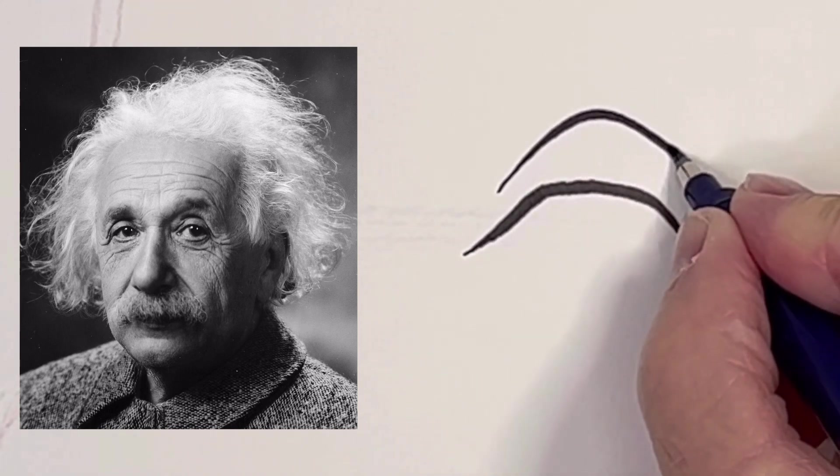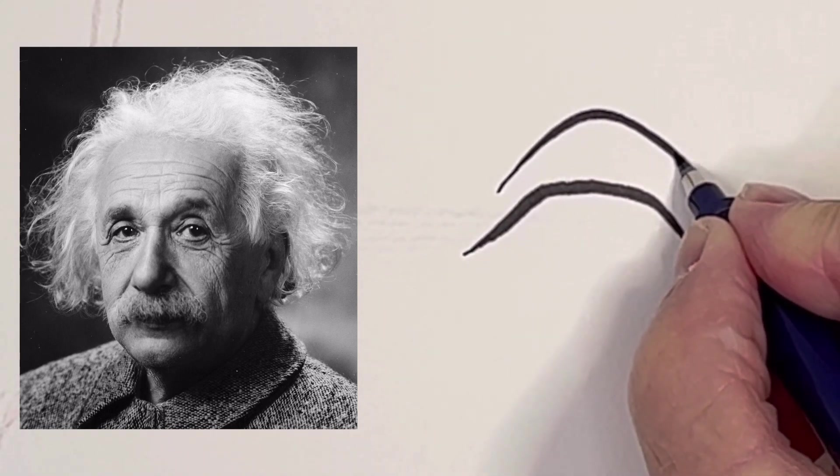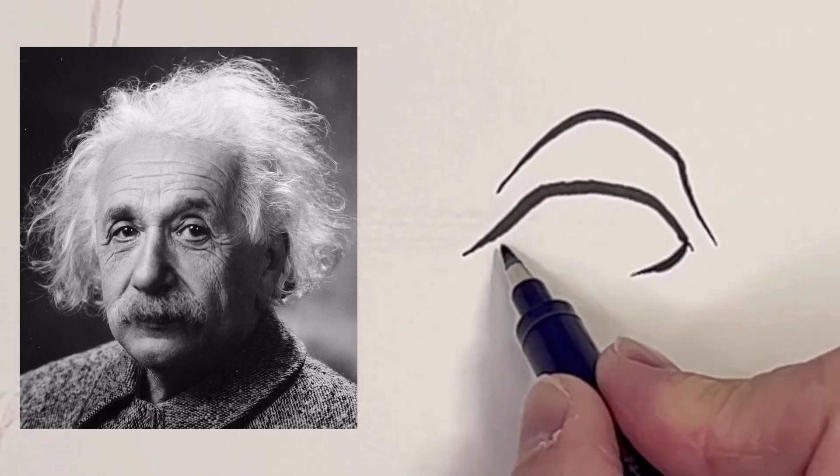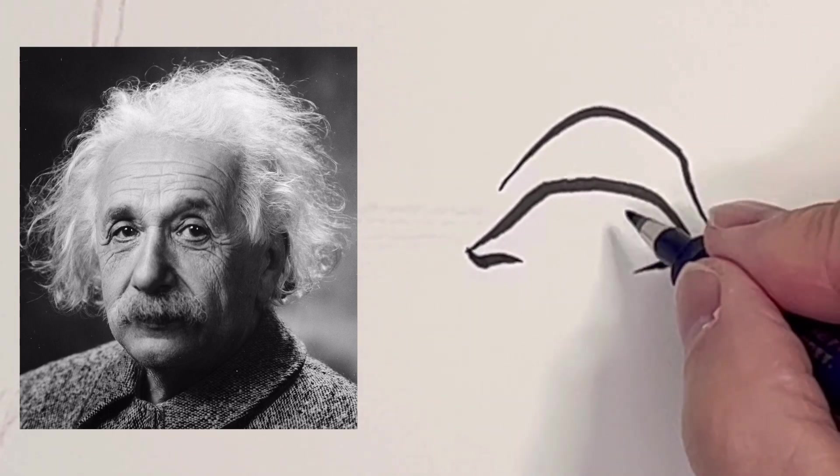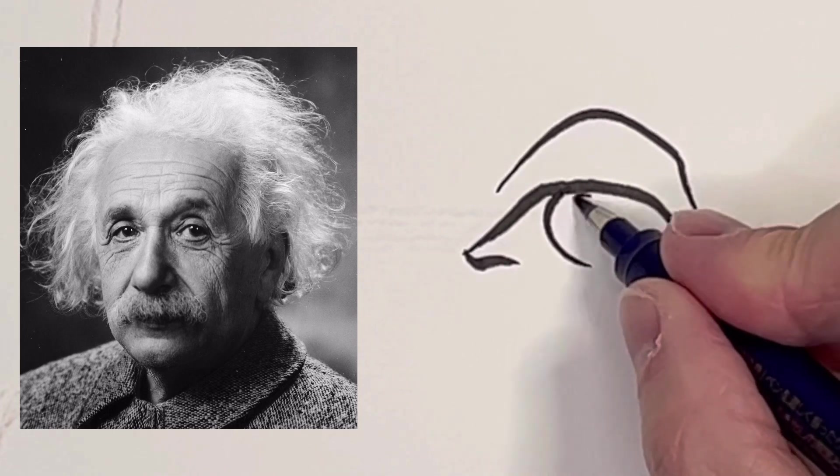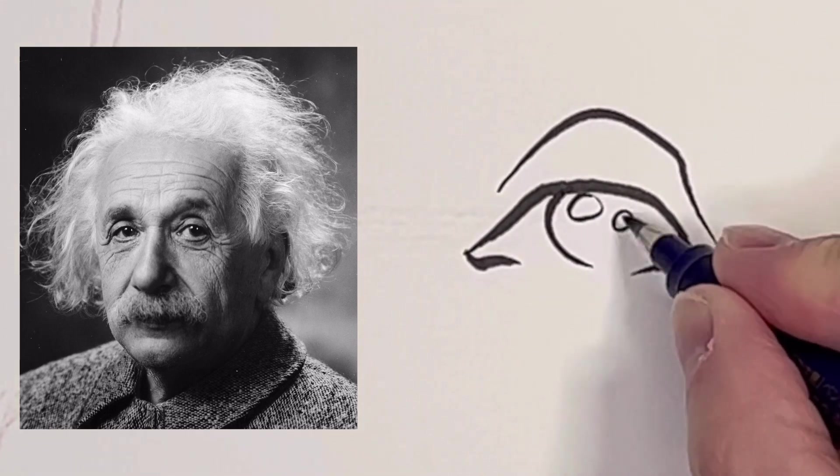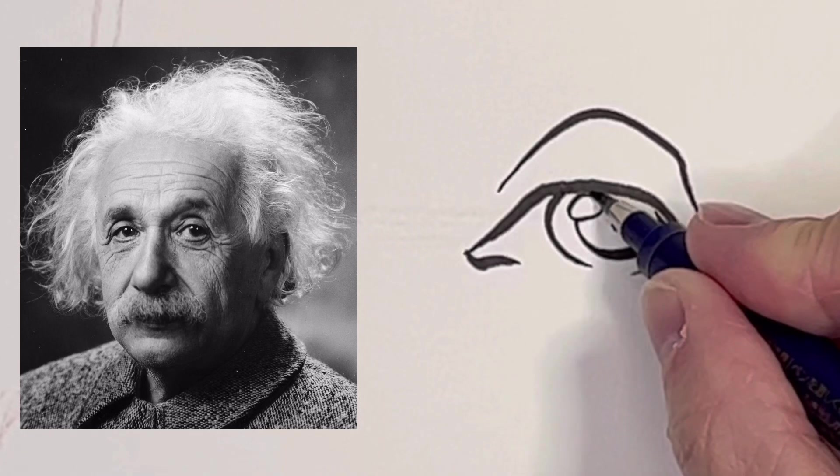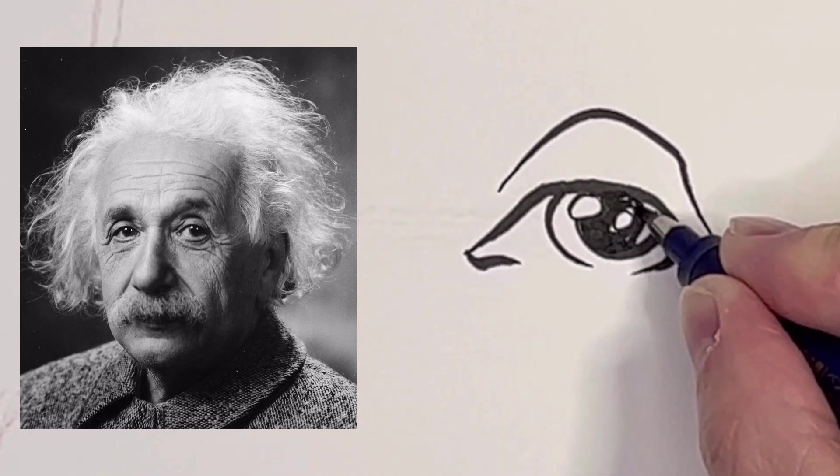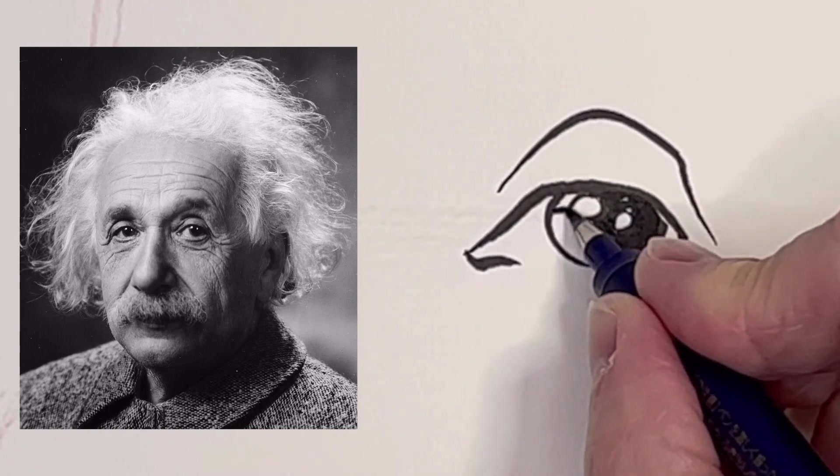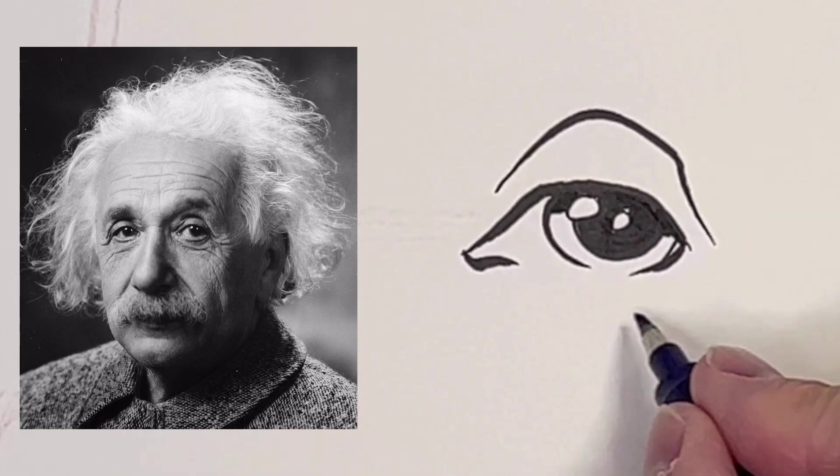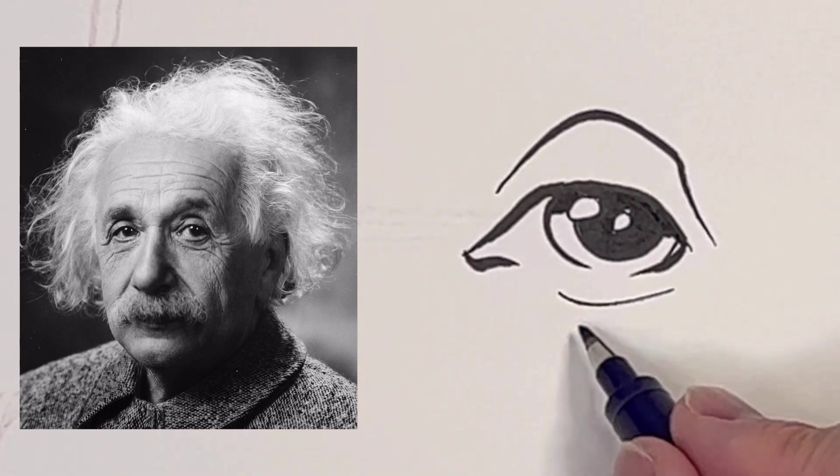He has sort of big droopy eyes, large eyelids. Eyes are dark, and on this photo there's two highlights, so I'm going to go ahead and draw both highlights in there, and a shadow from the eyelid. Under eyelid, and we've got some wrinkles.